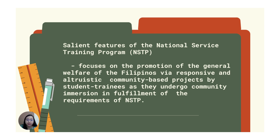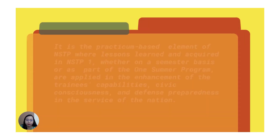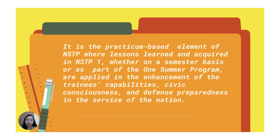Students undergo community immersion during the second phase of the training program. Community immersion is a requirement in order for you to graduate from the program. In RA 9163, Section 7, all higher and technical vocational institutions, public and private, must offer at least one of the program components. It is one of the important requirements of the National Service Training Program prescribed to students.